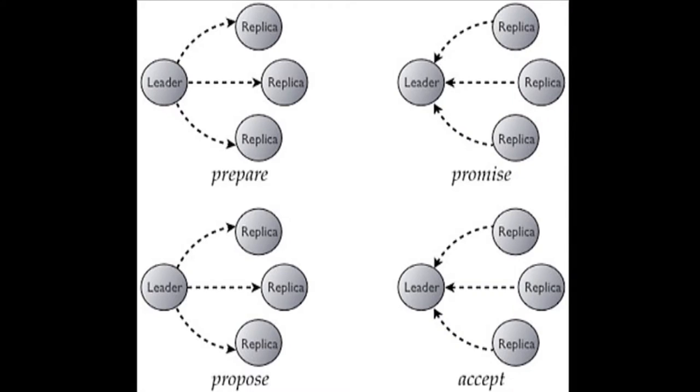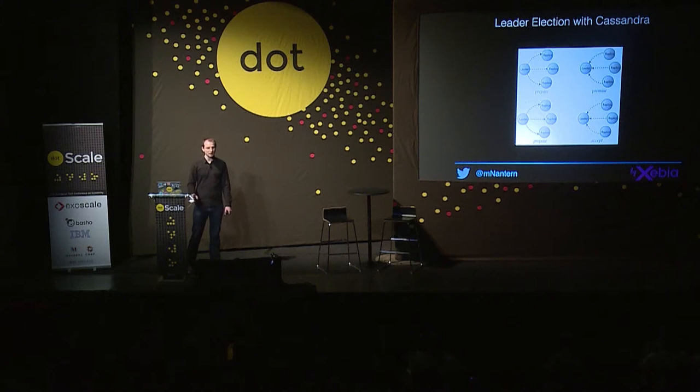There are two steps in Paxos. The first one is prepare-promise, and the last is propose-accept. Prepare-promise is the core of the algorithm. Any node may propose a value — we call that node a leader. The leader picks a number and sends it to the participating replicas. If the number is the highest the replicas have seen, it promises to not accept any proposal associated with any earlier number.